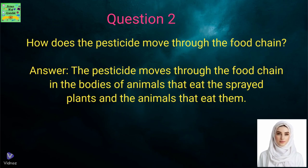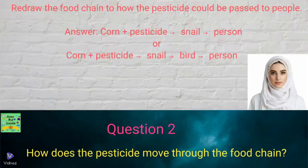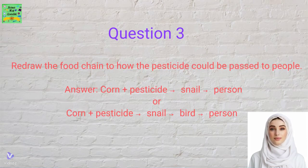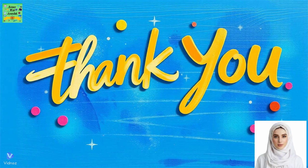Question 3: Redraw the food chain to show how the pesticide could be passed to people. Answer: Corn + pesticide → snail → person, or corn + pesticide → snail → bird → person. Thank you for watching.